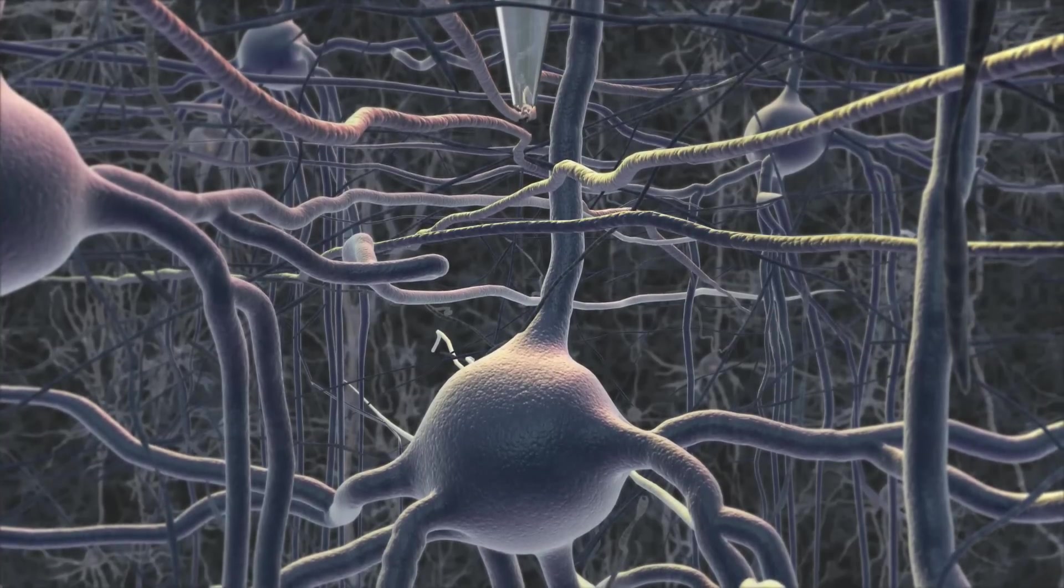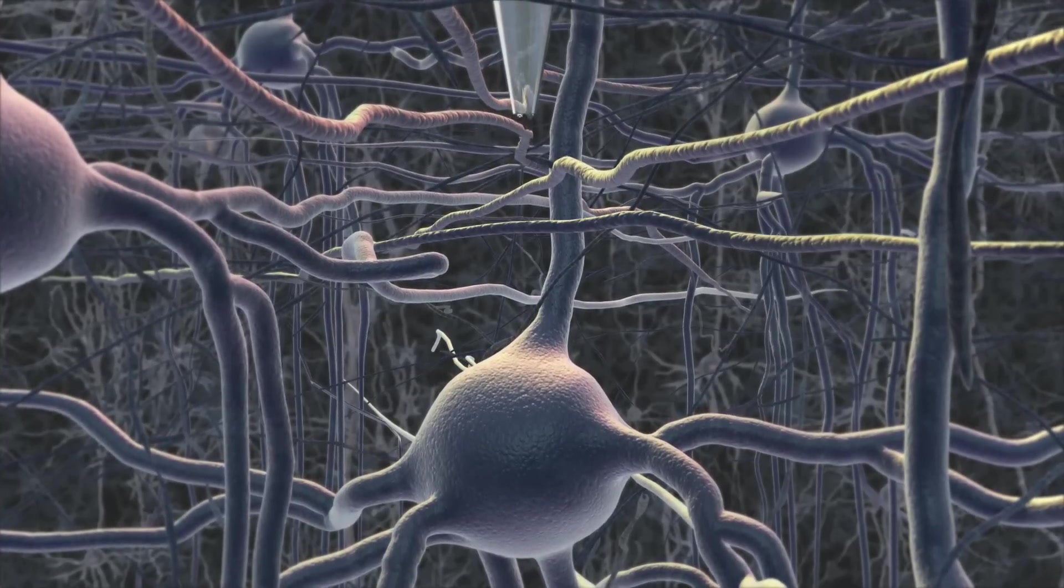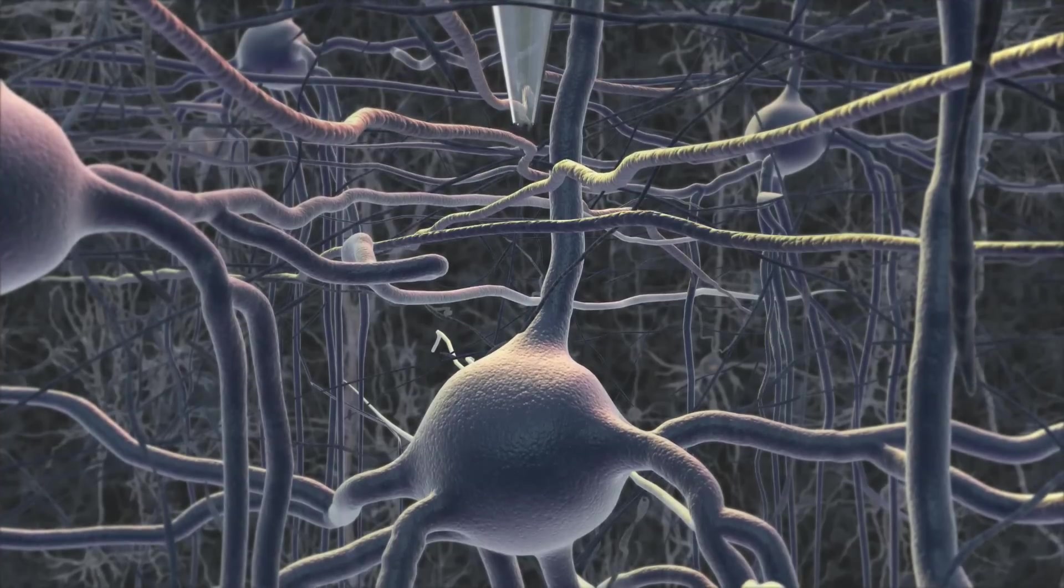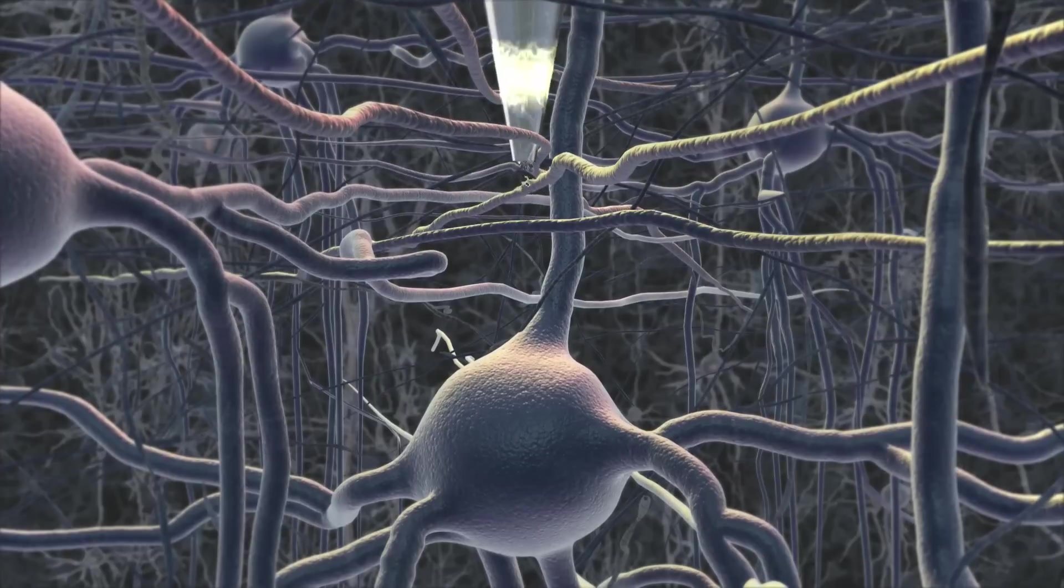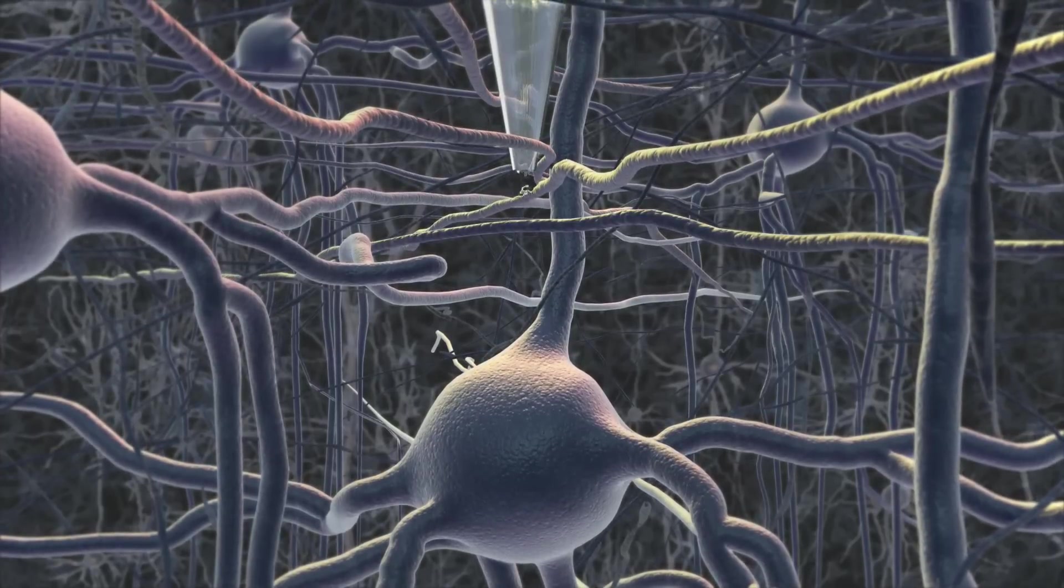It detects cells by delivering small pulses of electricity while the pipette is lowered in small steps, each about a thousandth of a millimeter long. When no neuron is present, the pulses of electricity diffuse away into the brain.